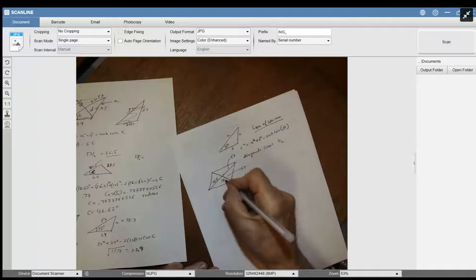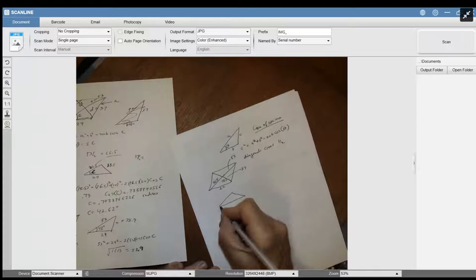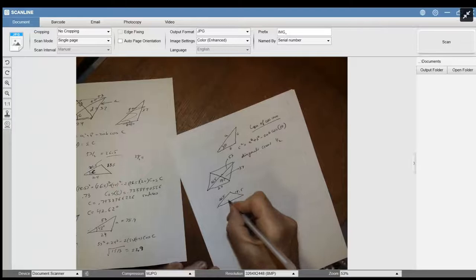And this down here is 24. So now we have this triangle down here, which is 26.5, 18.5, and 24 down here. You see that?